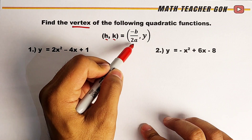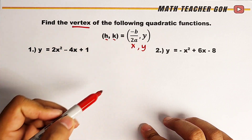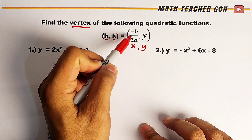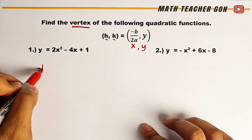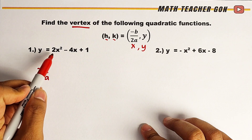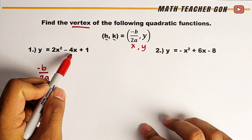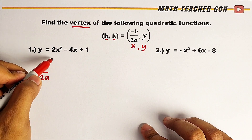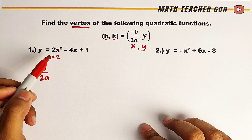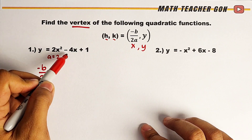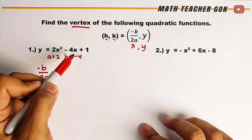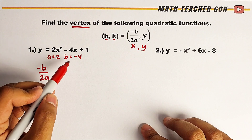This formula represents x and this is your y. For us to find the value of x or h, we will use the formula negative b over 2a. We have y is equal to 2x squared minus 4x plus 1. What is the value of a here? The value of a is 2 — the coefficient of your x squared. What about the value of b? That is the coefficient of your linear term, which is negative 4.